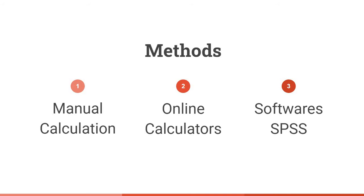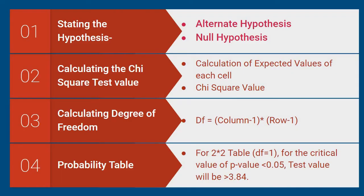There are three methods to apply chi-square test and calculate p-value: one is manual calculation, the second is online calculators, and the third is using software such as SPSS. First, I am going to demonstrate how to calculate manually. There are four steps in the chi-square test.